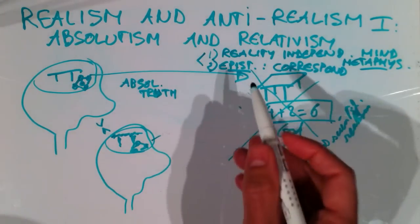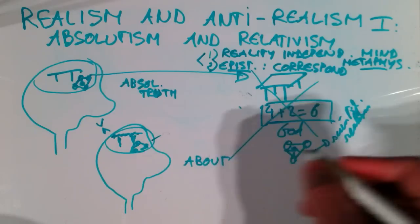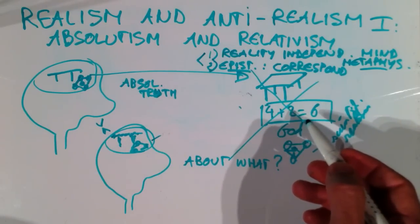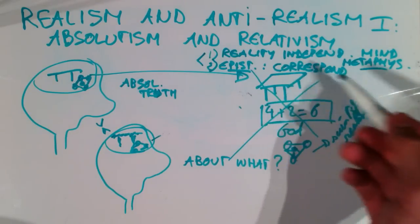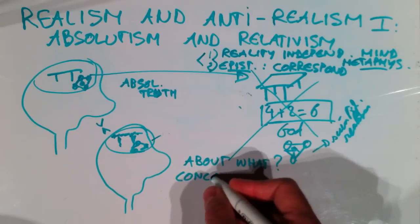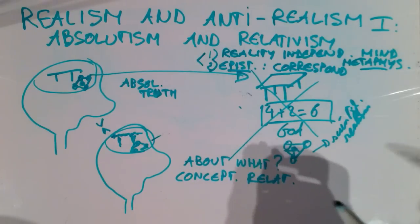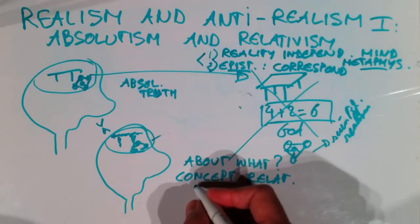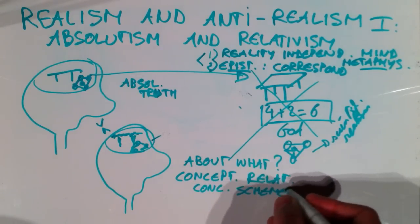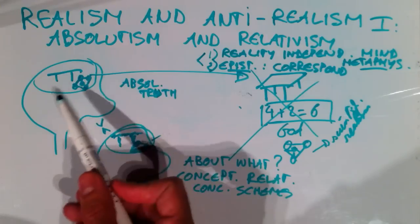Relativism — again, you should wonder: relativism about what? Here we have been talking about knowledge, about things. If you're a relativist about knowledge concerning tables or elementary particles, then we're going to call you a conceptual relativist. Conceptual relativists believe that different people have different conceptual schemes — that is, they see things in a different way. This guy has his own concepts and principles by which he thinks, and this guy has other principles.